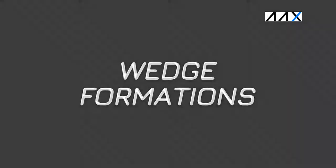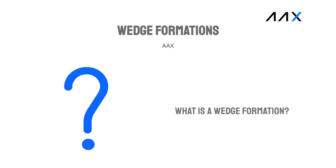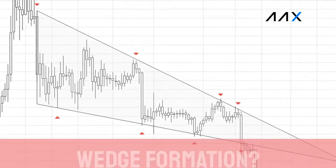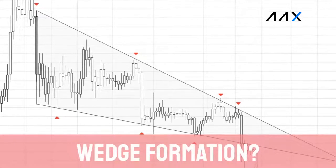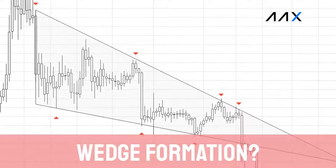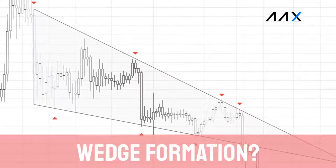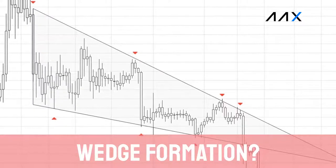Wedge formations as a part of the AAX Academy. What is a wedge formation? A wedge is a formation of converging resistance and support lines. Wedge formations form regularly in the cryptocurrency market and they can indicate both reversal and the continuation of trends.